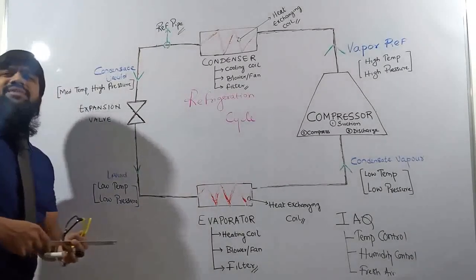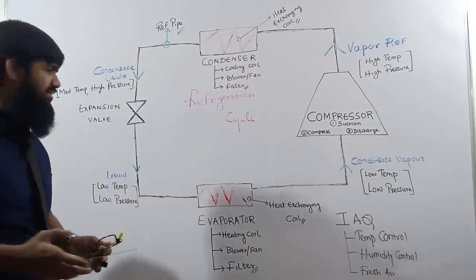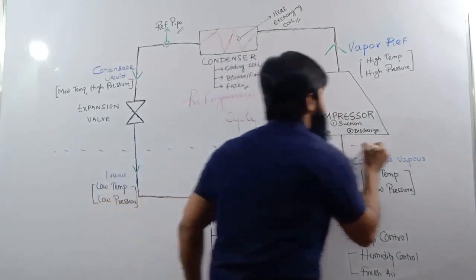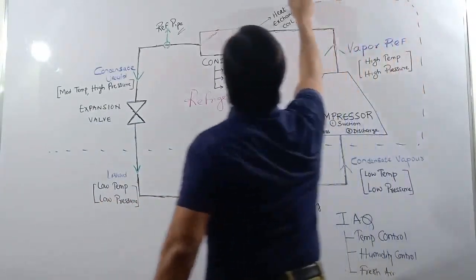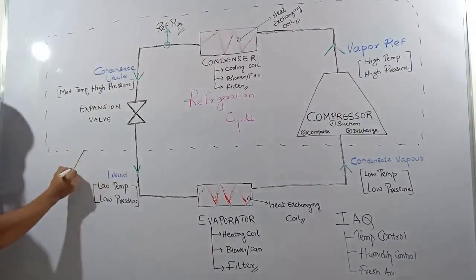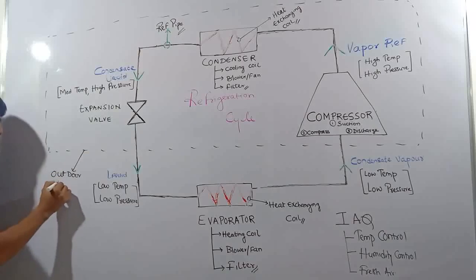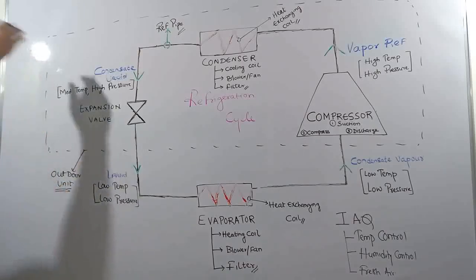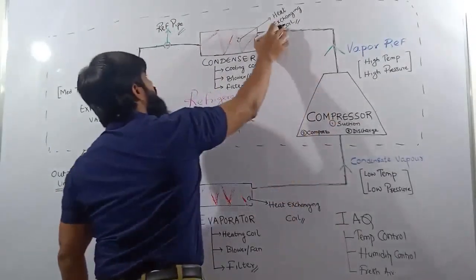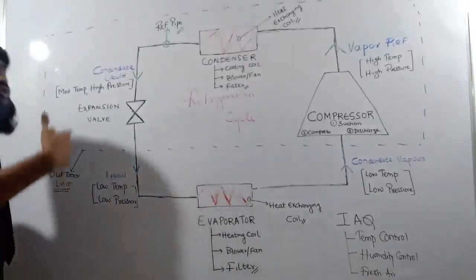The evaporator can also be named as the indoor unit (IDU). In a split AC, the compressor, expansion valve, and condenser are all compacted into the outdoor unit (ODU). The evaporator, on the other hand, is within your room, in the indoor unit (IDU).